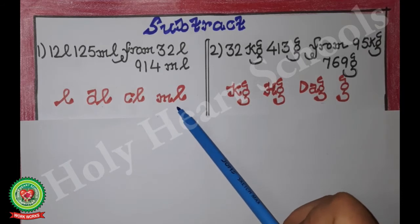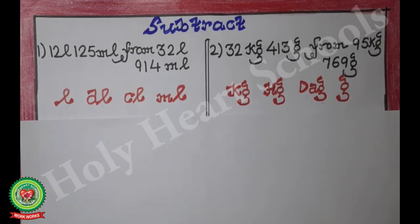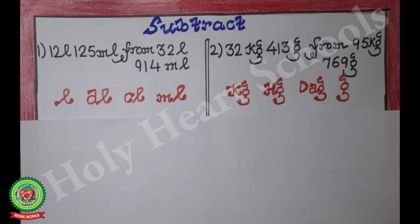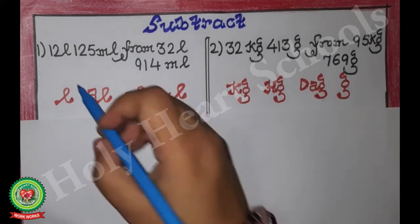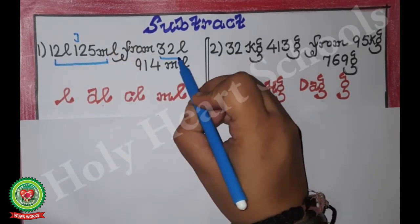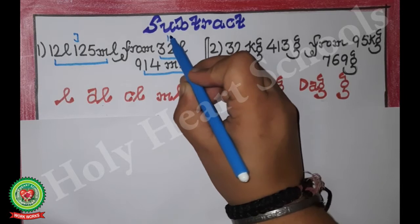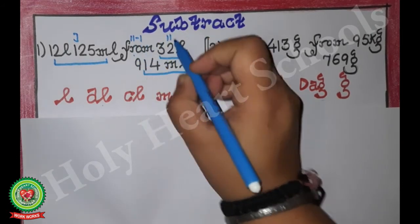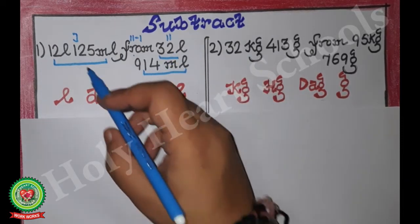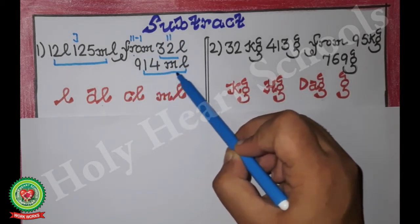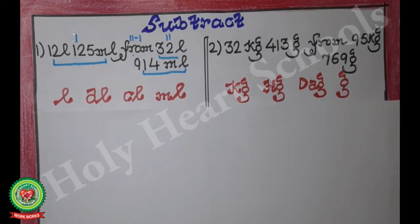We have started the table from liter and written it till milliliter. Next step is we have to arrange the values below these units. But notice there is the word 'from' in the problem. 'From' means second minus first — so the second number will come at the first place and the first number will come at the second place.